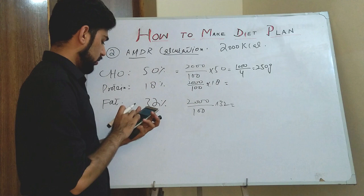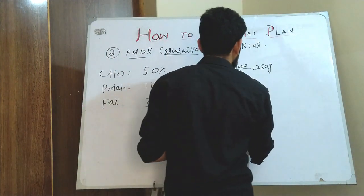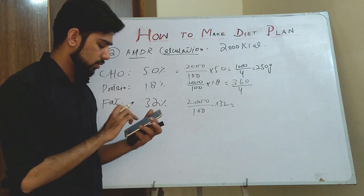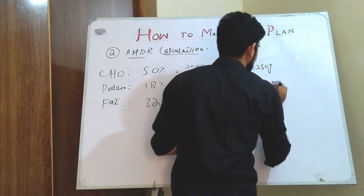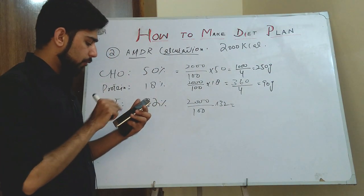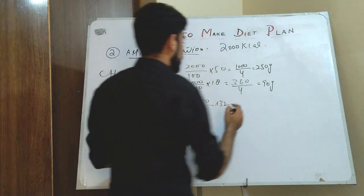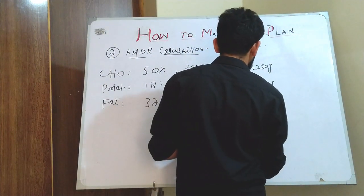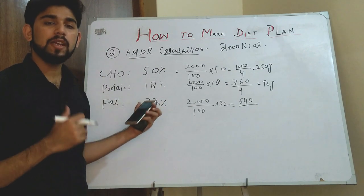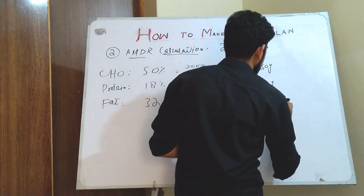Similarly for protein: 2000 divided by 100 multiplied by 18 comes to 360 calories. We divide by 4 because one gram of protein gives 4 calories, which gives 90 grams of protein. For fat: 2000 divided by 100 multiplied by 32 comes to 640 calories. We divide by 9 because one gram of fat gives 9 calories, which comes to 71 grams of fat.